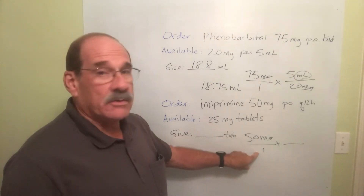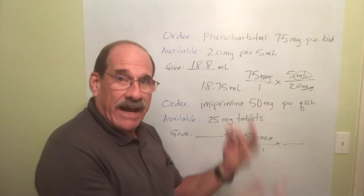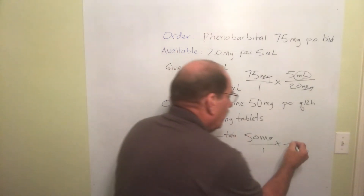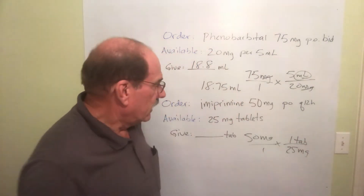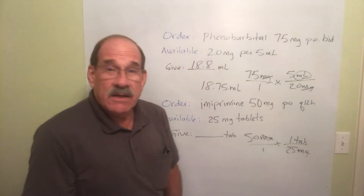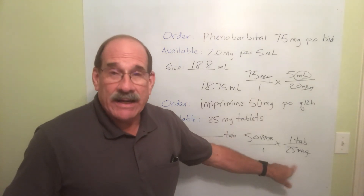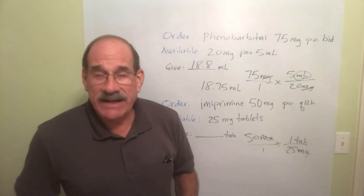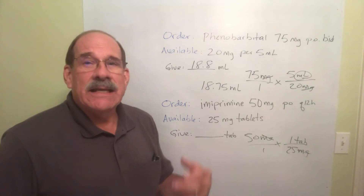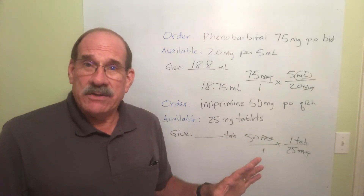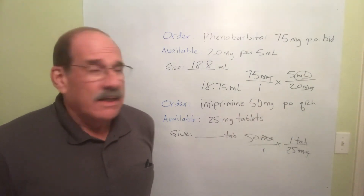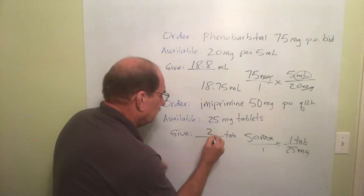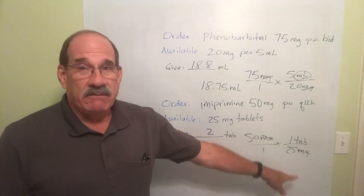The 50 milligrams goes over one. The dosage strength, of course, is over here — going backwards, bottom to top. I have 25 milligrams in every one tablet. Both of these are the same, so I can cancel those. See here — 50 divided by 25. That's two, not half. So unless you're a mathematical genius or you do thousands of these and get the hang of it, be very careful doing that in your head. The answer is two tablets, because it's 50 divided by 25.